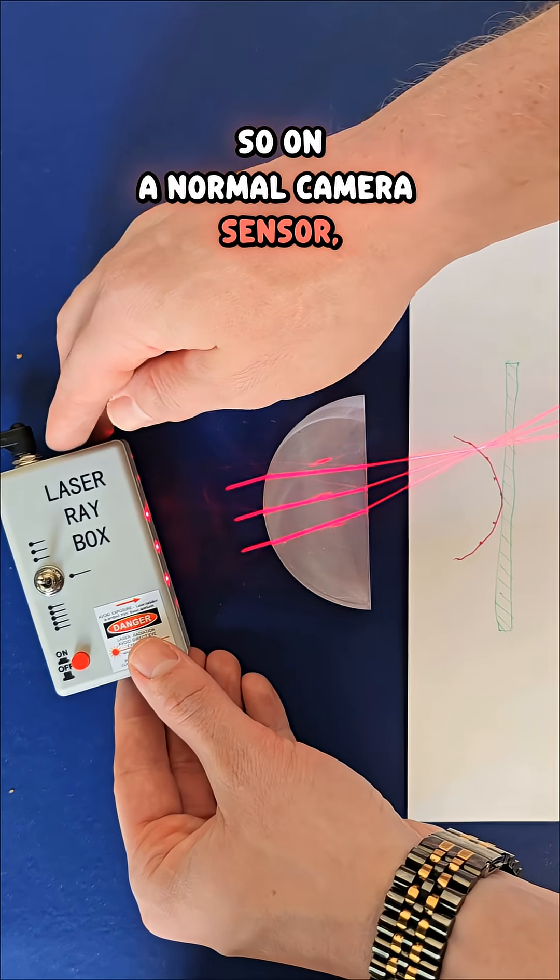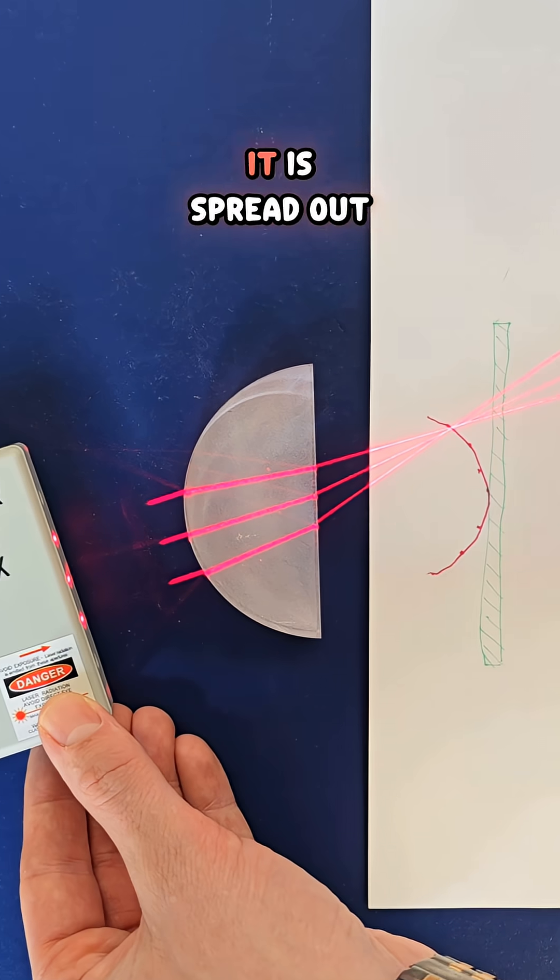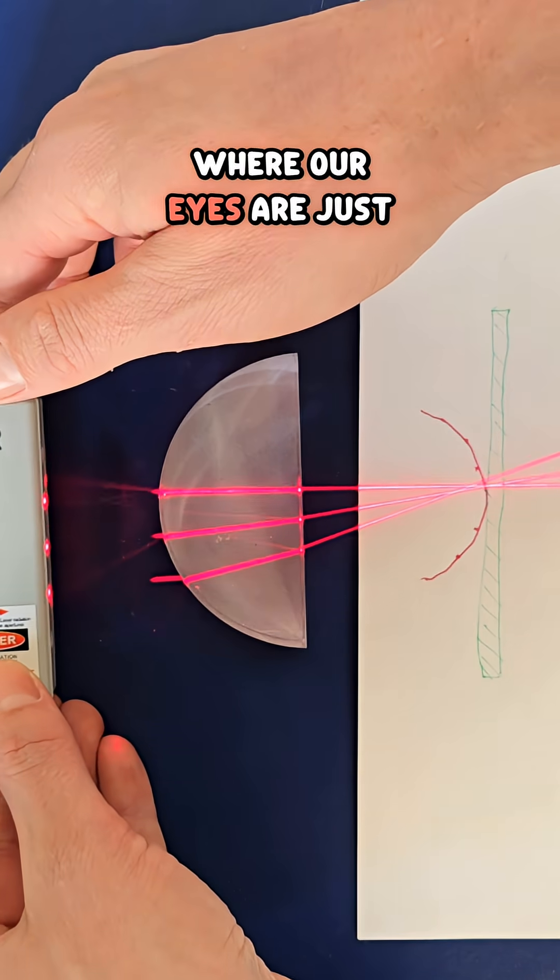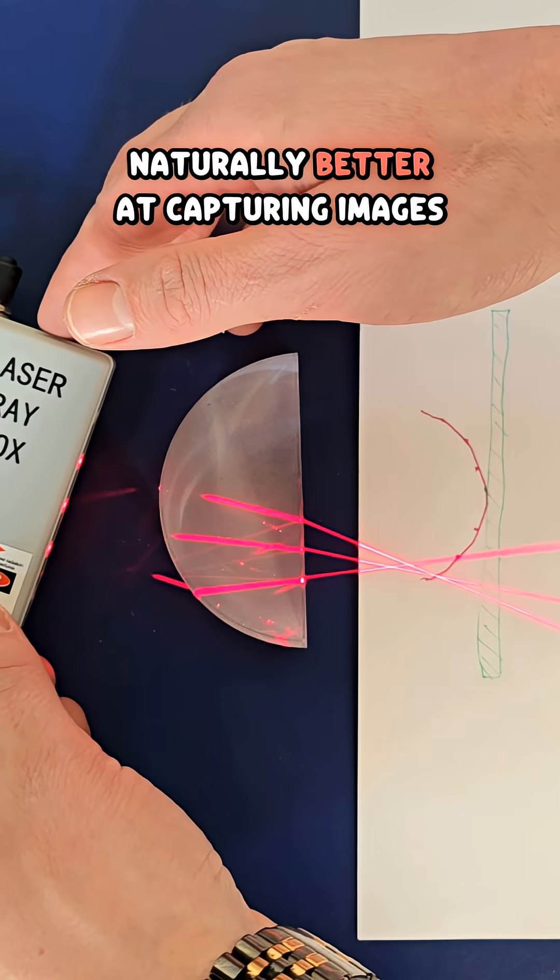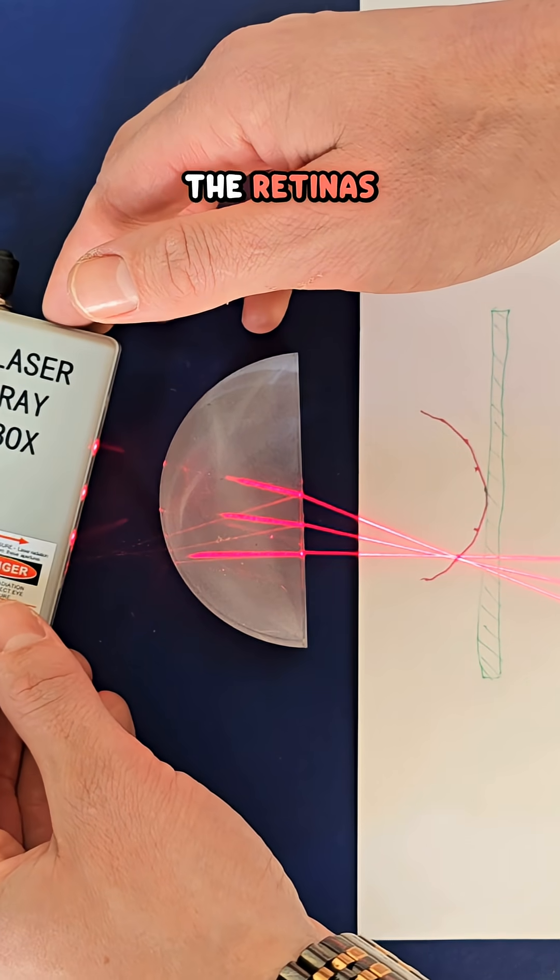So on a normal camera sensor, for light coming in at steeper angles, the light that actually hits it is spread out. Things blur and you lose some resolution there, where our eyes are just naturally better at capturing images because of their natural curve to the retinas.